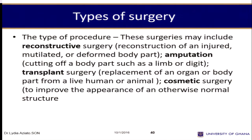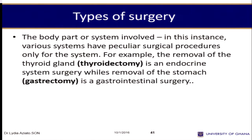Reconstructive surgery involves correcting something that is not aesthetic or is deformed — making it look nice or functional. We also have amputations, where a limb or finger is removed. We also have transplant surgeries, where a diseased organ is removed and replaced with a compatible new one. All these fall under the language of types of surgery.